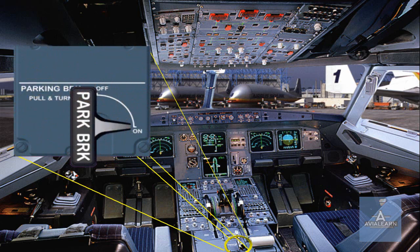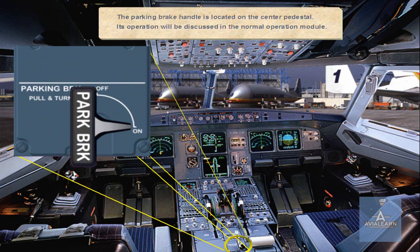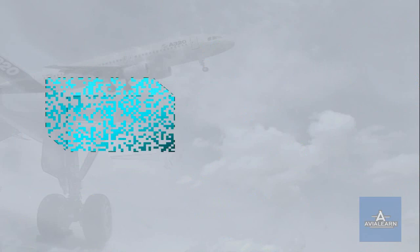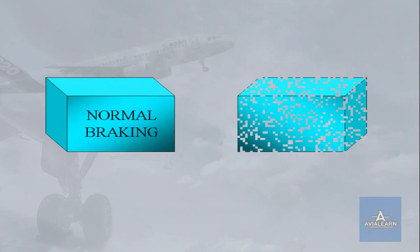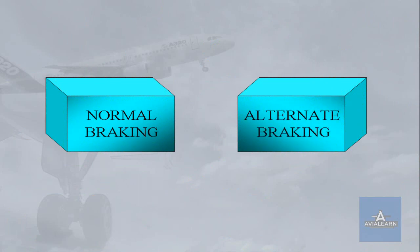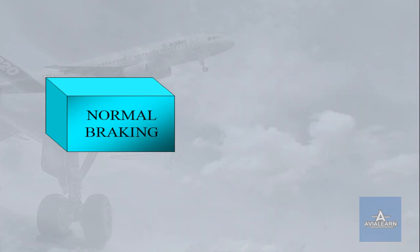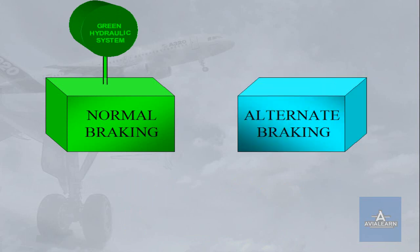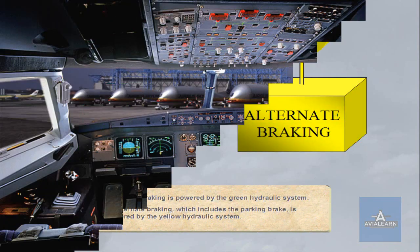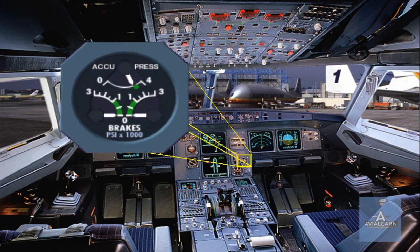Its operation will be discussed in the normal operation module. The A320 provides four braking modes: normal braking, alternate braking with anti-skid, alternate braking without anti-skid, and parking brake. Normal braking is powered by the green hydraulic system. Alternate braking, which includes the parking brake, is powered by the yellow hydraulic system. The gauge which measures pressures from the alternate braking system is located on the main instrument panel. We will discuss the normal and alternate systems in the modules that follow.